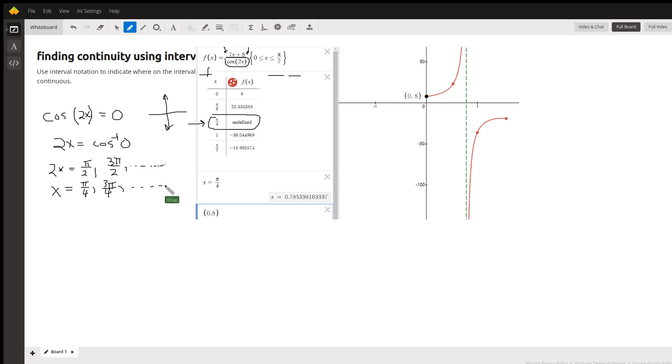This is the only value that is in the interval from zero to π over 2, so that's where this function is discontinuous.